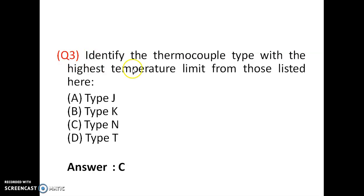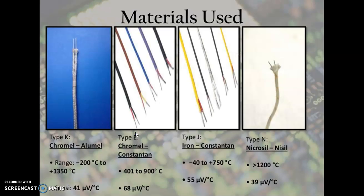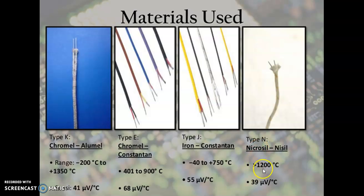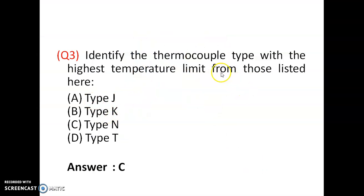Question 3: Identify the thermocouple type with the highest temperature limit from type K, J, N, T. Type K is up to 1350°C, type E up to 900°C, type J up to 750°C, and type N greater than 1200°C. So the thermocouple type with the highest temperature limit is type K (1350°C), and option is C — type N is also high but type K exceeds all listed here.